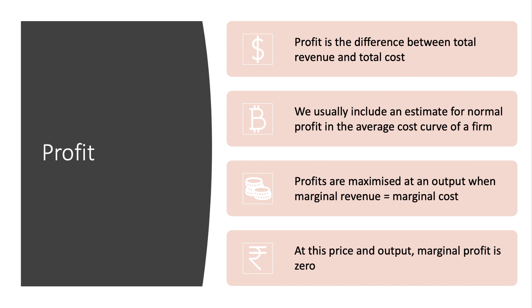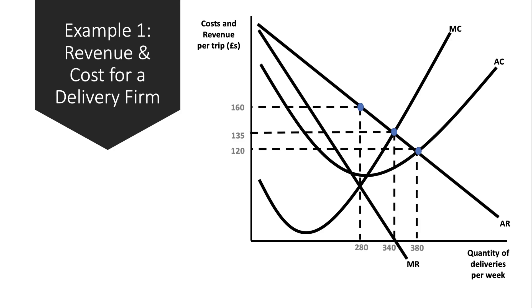Here's our first example - the cost and revenue curves for a local parcel delivery firm. Average and marginal revenue is downward sloping and the diagram shows their short run marginal and average cost as well.